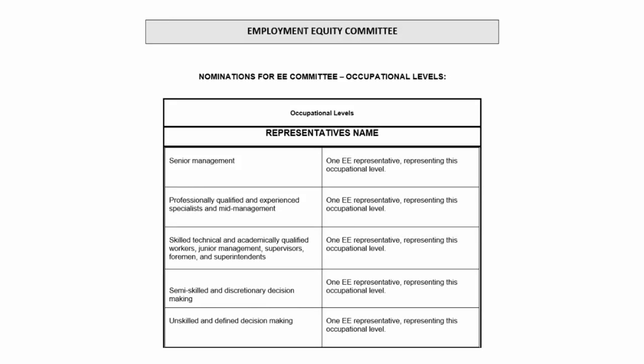Please bear in mind the constituency of your EAP committee needs to include employees from senior management, middle management, junior management, semi-skilled employees, as well as unskilled employees. Those employees will be deemed representatives and they will represent the specific occupational level.